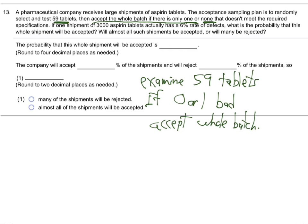So the probability this whole shipment will be accepted — that's a binomial thing. Why? What are the two states? Well, the individual tablets are good or bad. You're going to pick up 59 tablets in a row and each one you say good or bad, good or bad, good or bad. So it's binomial, and we're looking at 59 tablets.